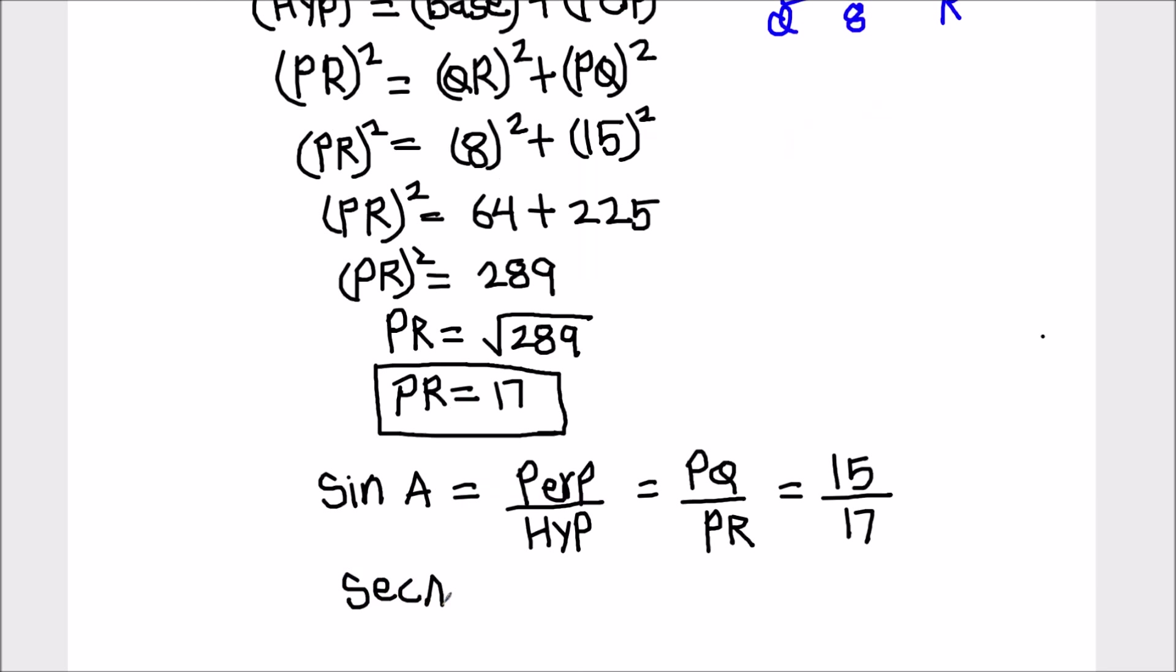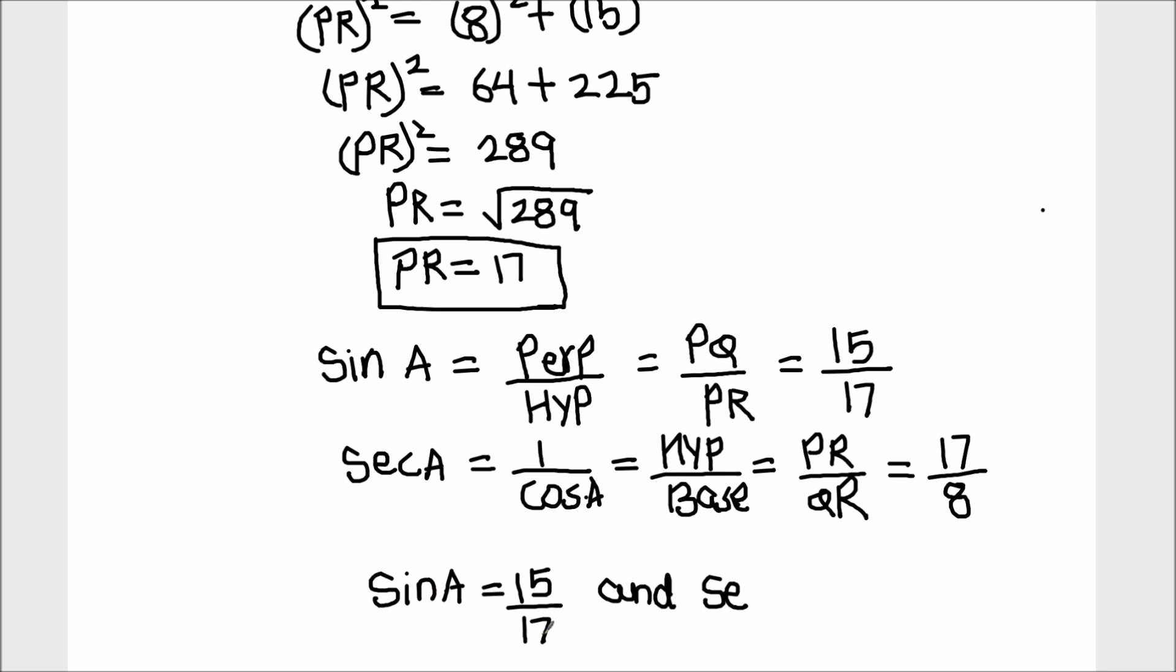The next value we need to find is sec A. Sec A is the reciprocal of cos A, which is hypotenuse upon base. That equals PR upon QR, which is 17 upon 8. So sin A equals 15 upon 17 and sec A equals 17 upon 8.